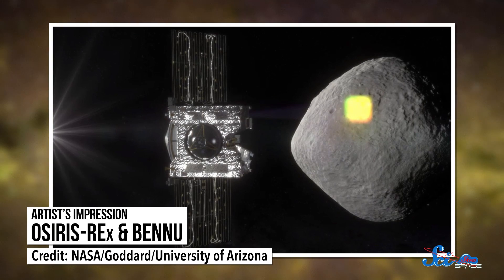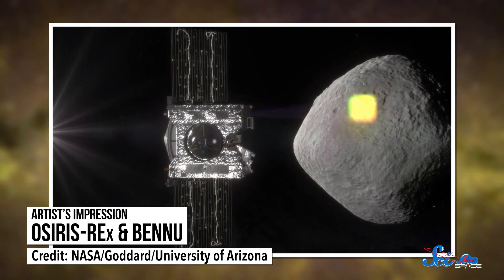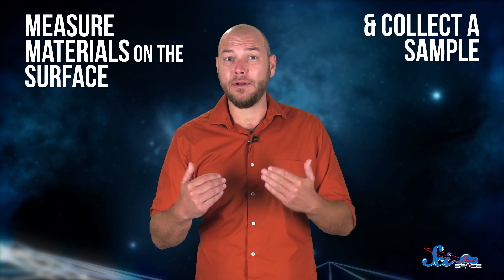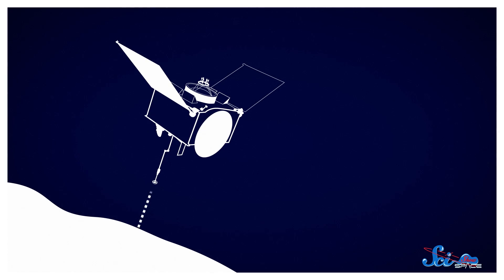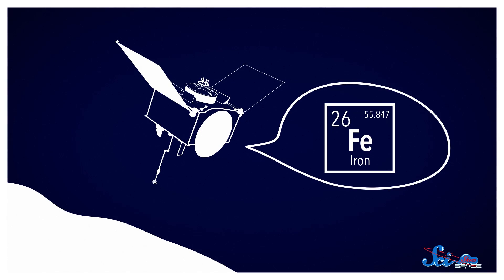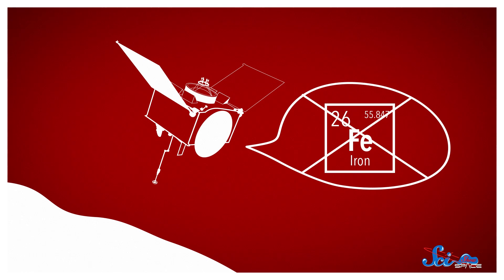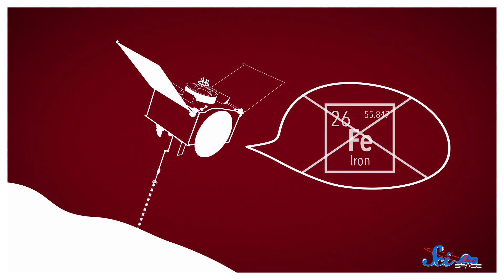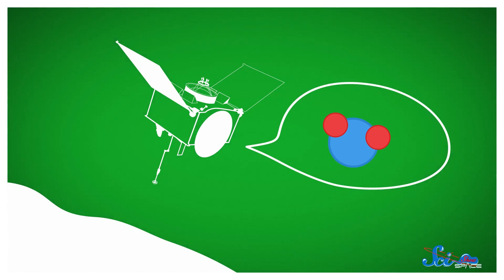This is the OSIRIS-REx mission, and one of its goals is to tell us how accurate spectrometers are. The OSIRIS-REx spacecraft will measure a bunch of stuff, including the materials on the surface of the asteroid, then collect a sample to send back to Earth. If the spectrometers say that there are compounds in the asteroid clay that aren't actually there, then we'll need to figure out how to improve our technology. But if the instruments turn out to be right, we're in business.